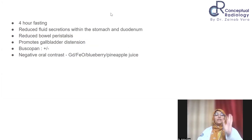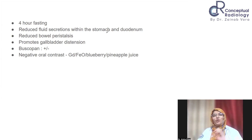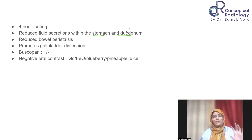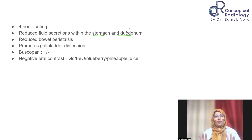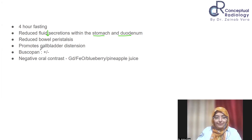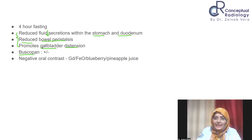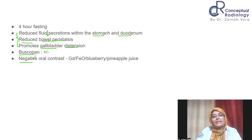Patient preparation requires ideally at least four hours of fasting. This reduces fluid secretions within the stomach and duodenum, suppresses background GIT secretions, reduces bowel peristalsis to decrease motion artifact, and promotes gallbladder distension — three key benefits. Buscopan is optional: 10 mg or 20 mg IV as an anti-peristaltic agent can be given. Some centers additionally administer a negative oral contrast to further suppress background GIT signal.